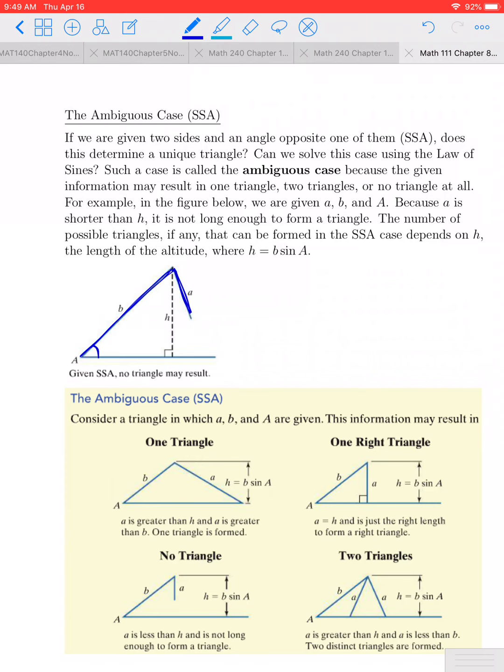It turns out that there's what's referred to as the ambiguous case of the law of sines. So the question boils down to, can we solve this triangle? In other words, is there going to be such a triangle that's going to exist here? Because A is shorter than H in this case, what we see is that if you have these three lengths, it's not going to be possible to form a triangle using those values.